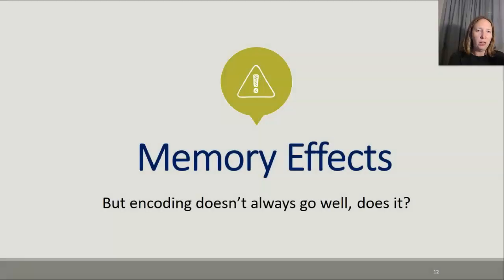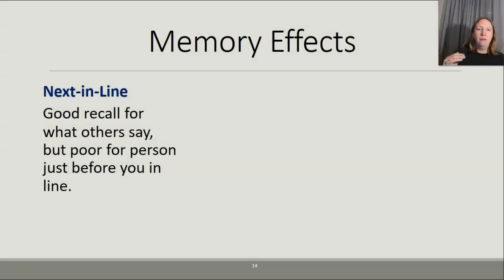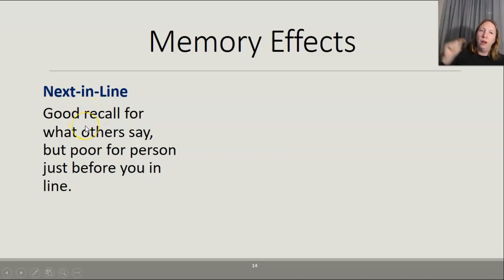This is an example of a memory effect — something that makes a memory stronger or weaker. When encoding doesn't go well, it's usually because of a memory effect. Self-referencing is considered one of the best effects for making a memory stronger. The next-in-line effect is when you have good recall for what others say, but poor recall for the person who spoke just before you in order — because you're too busy thinking about what you're about to say.